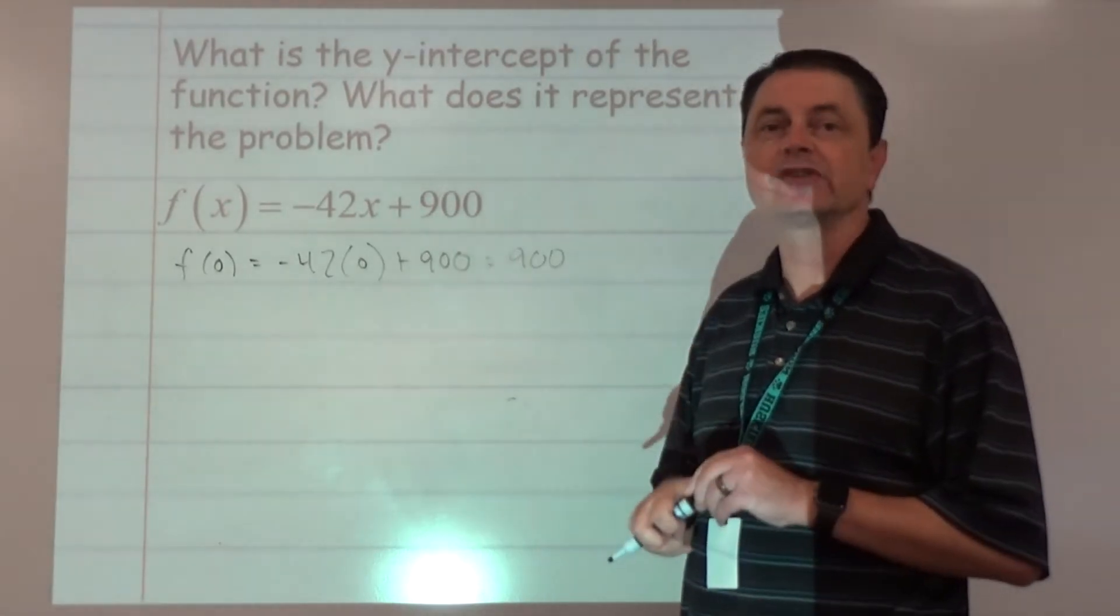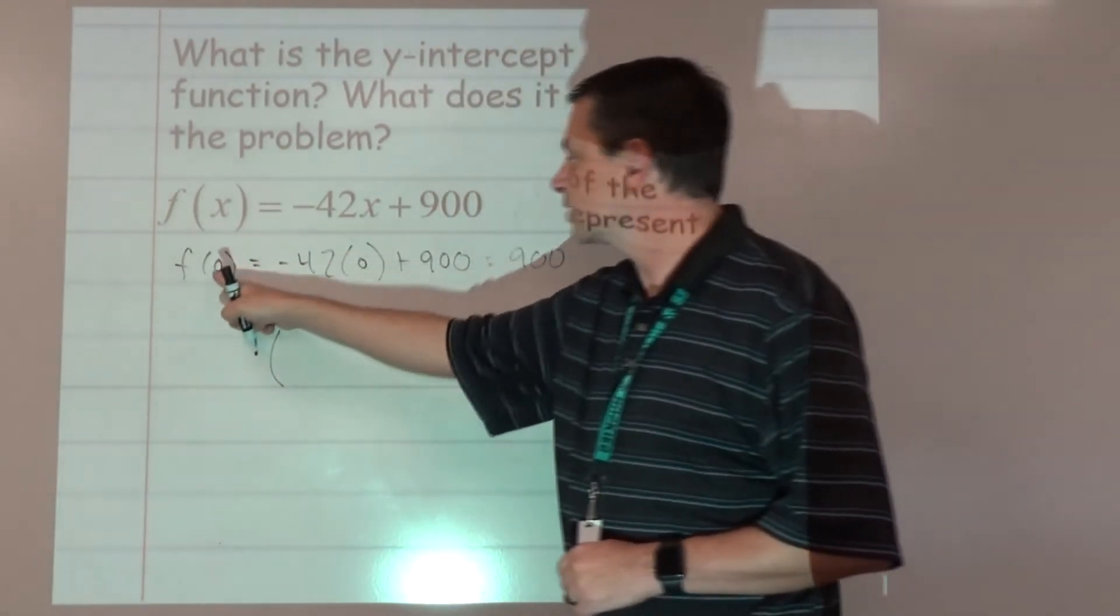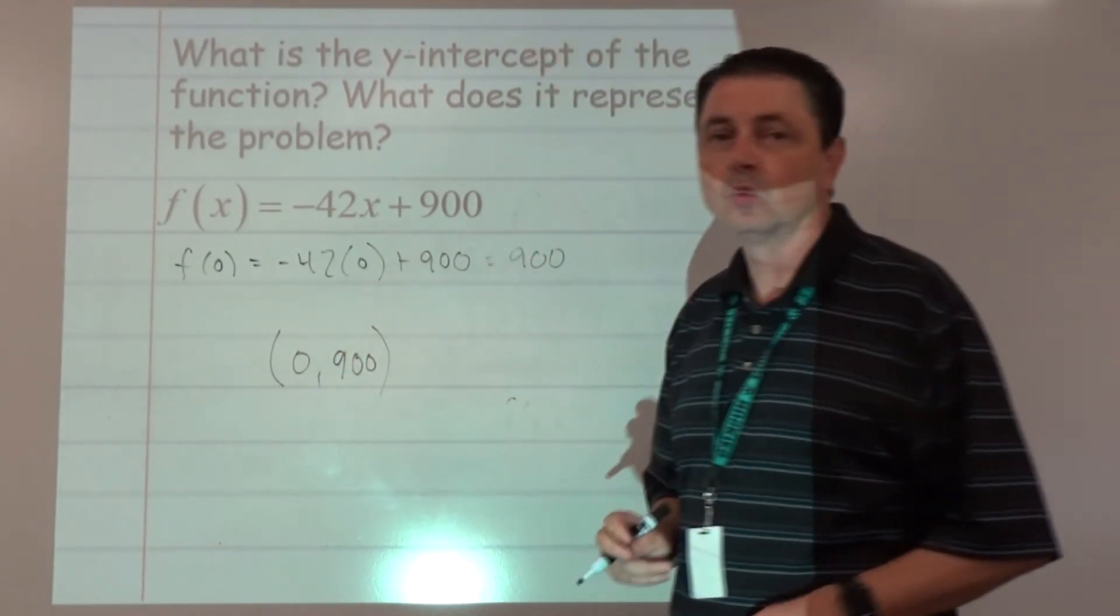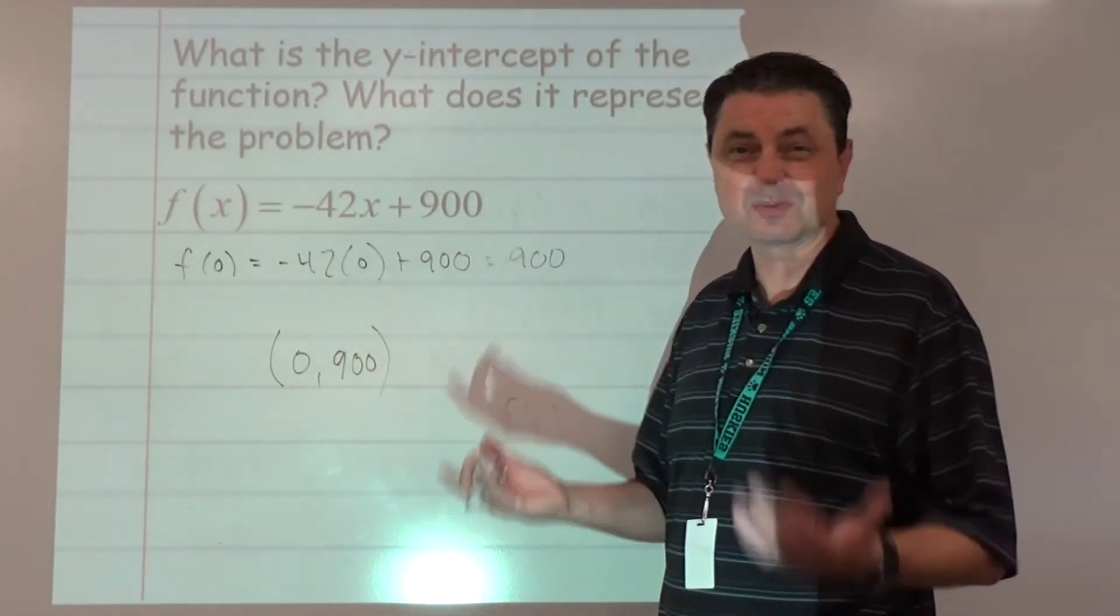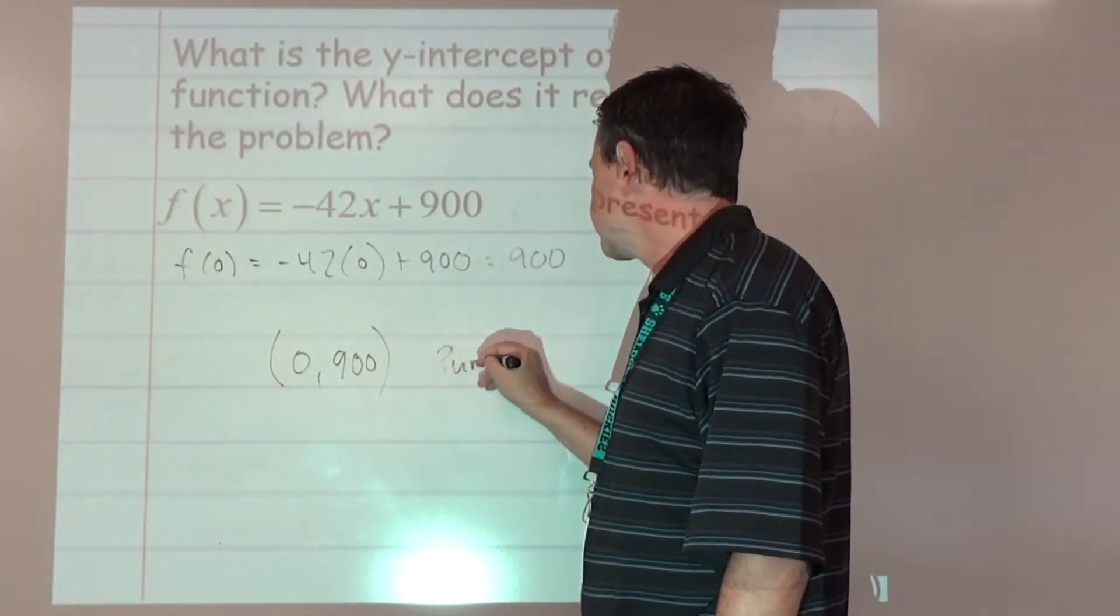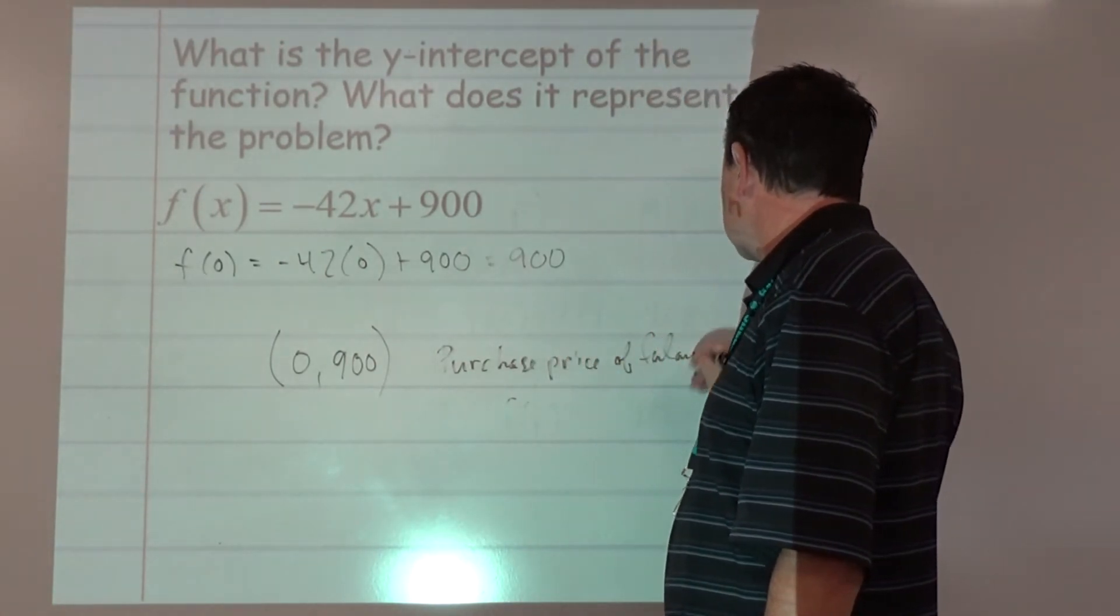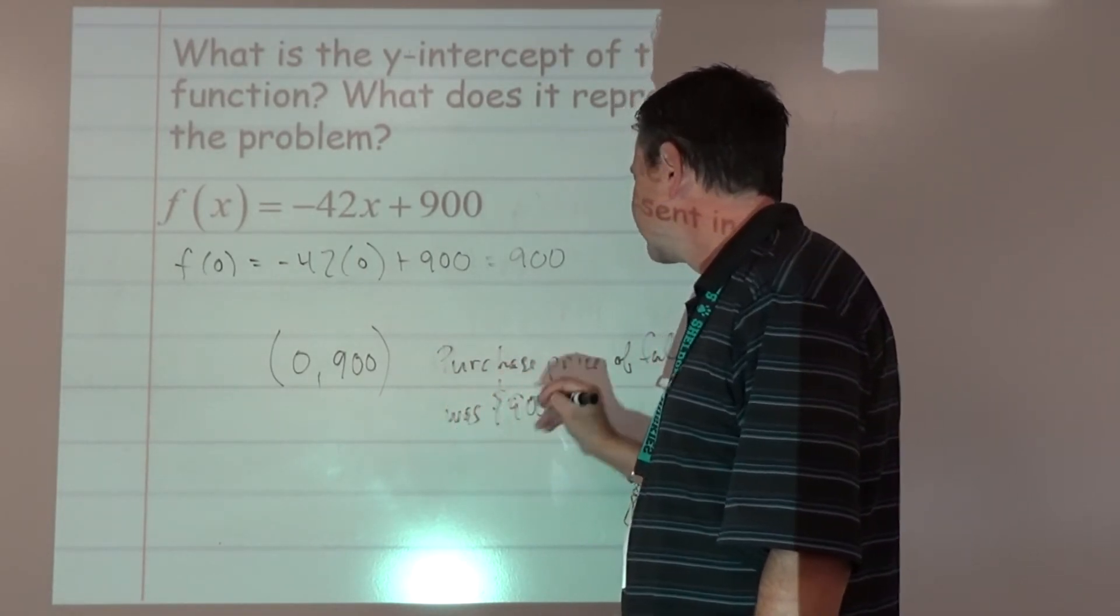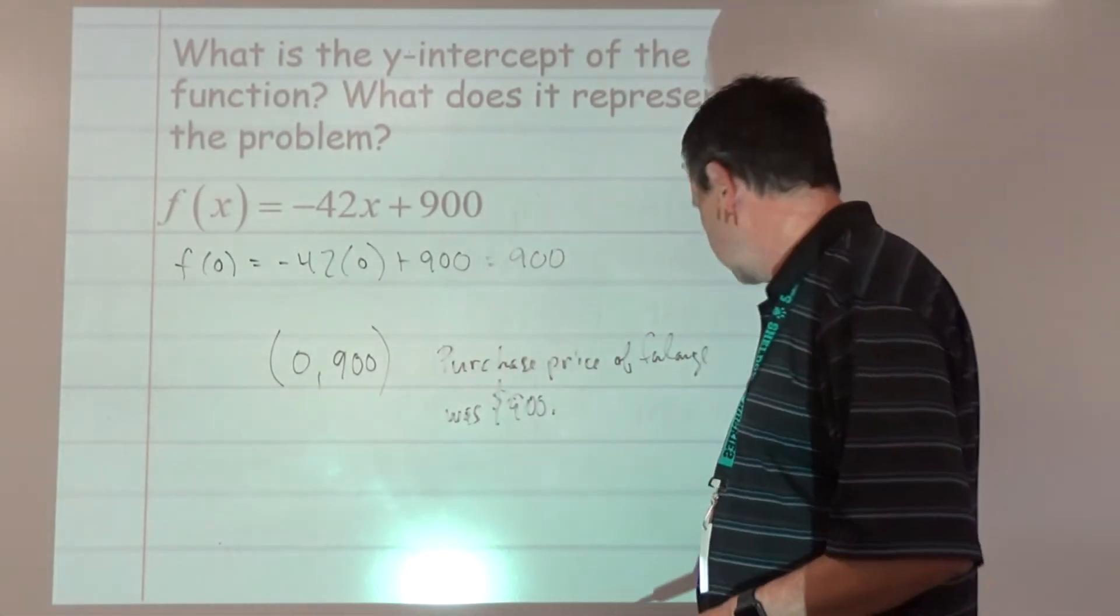Intercepts are points. Points have parentheses. x was zero, y was 900, so (0, 900). What does it mean in this problem? At time zero, the value is 900. So that's probably the purchase price. We might say initial value or purchase price of the falange was $900. That's what a y-intercept means - the starting value.